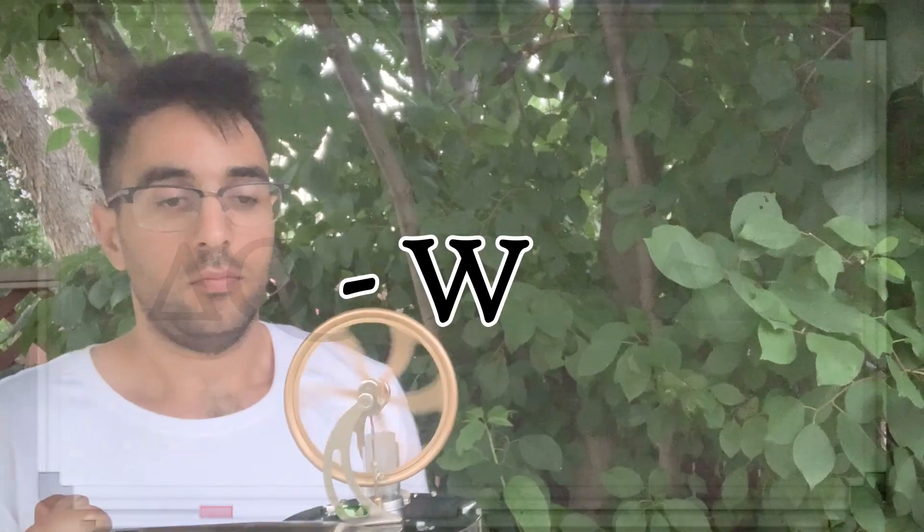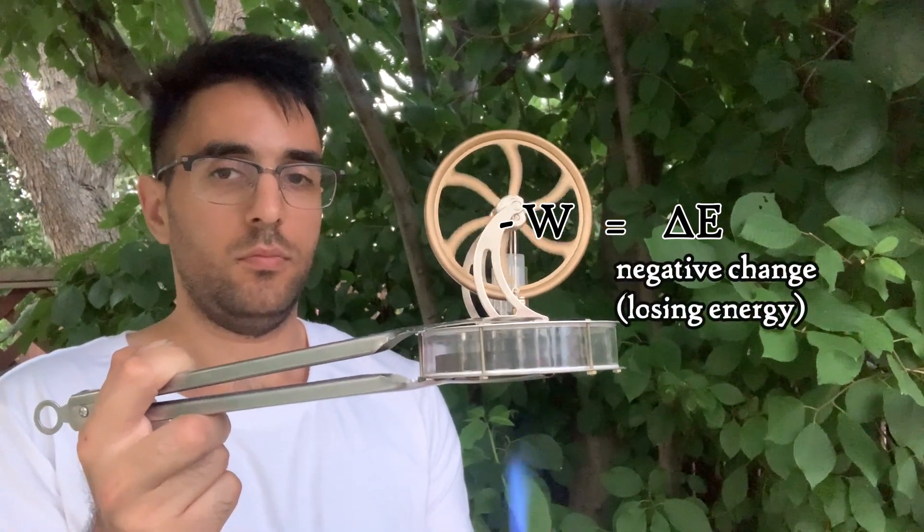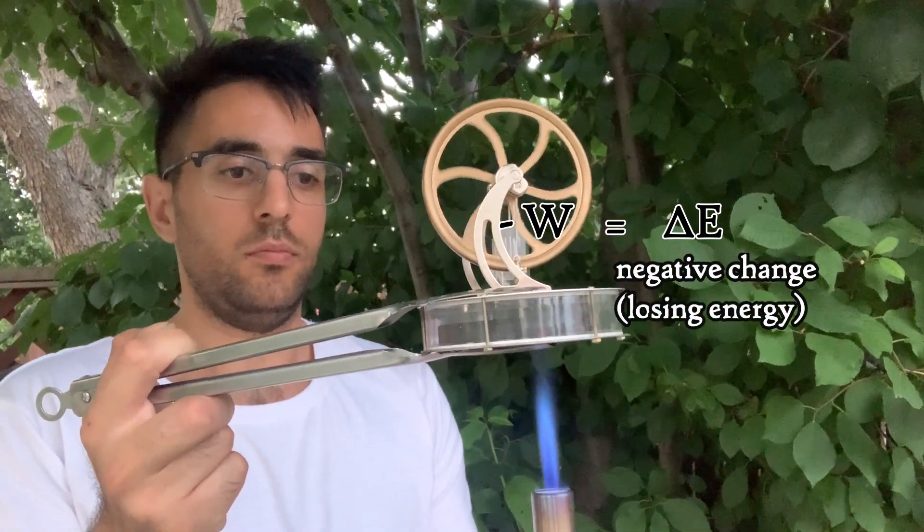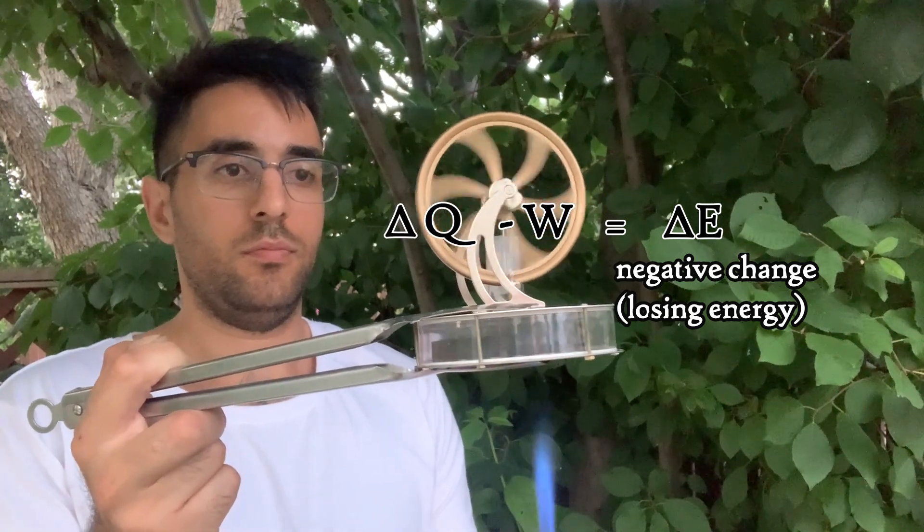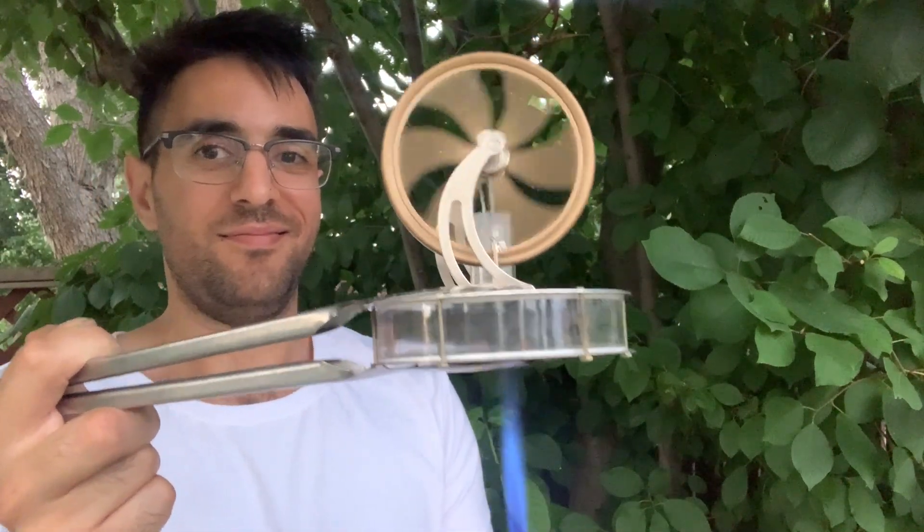If work is being done, like say in an engine, then the energy in that engine will be used up. And that energy has to be resupplied as either work or heat in order for it to keep running. In other words, a perpetual motion machine is, according to the first law, impossible.